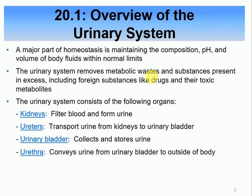Homeostasis is to maintain the composition of body fluid — basically composition, pH, volume — everything should be contained within the normal range. The urinary system participates in homeostasis. Beside the regular function of excreting metabolic waste products, anything that's excess — not necessarily waste — if we have too much of something, we will get rid of it.